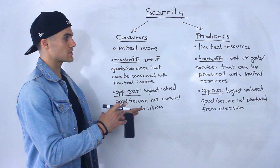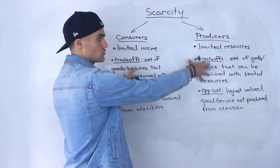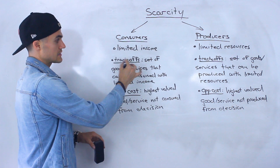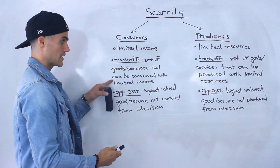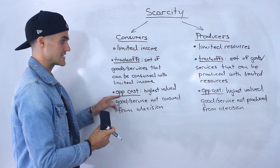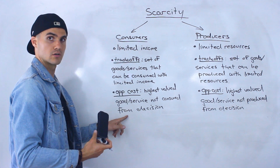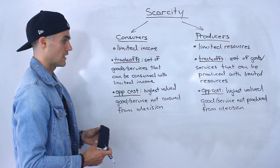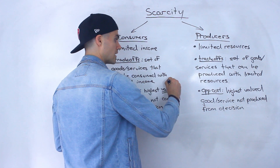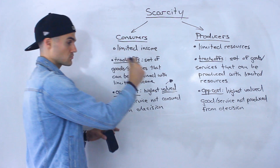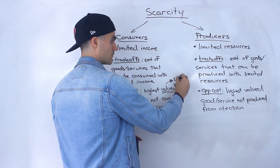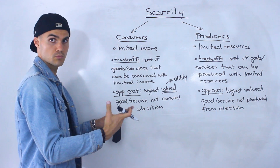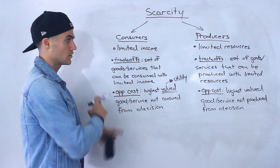Taking those two concepts of trade-offs and opportunity costs and applying them to consumers and producers: under consumers, trade-offs is basically the set of goods or services that can be consumed with limited income, while the opportunity cost is the highest valued good or service not consumed after you make a decision. What determines value for a consumer? Utility. So it's the highest utility good or service not consumed after you decide to consume another good or service.